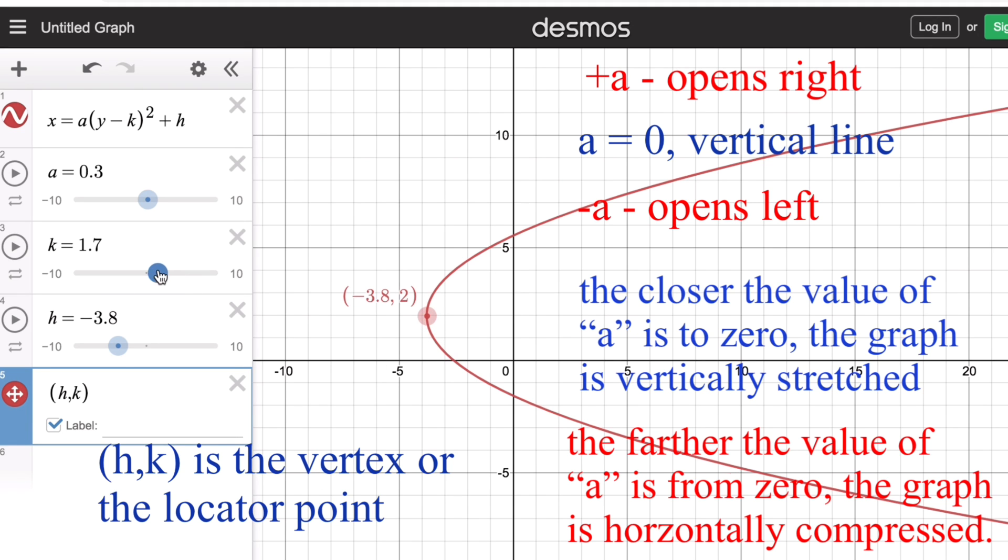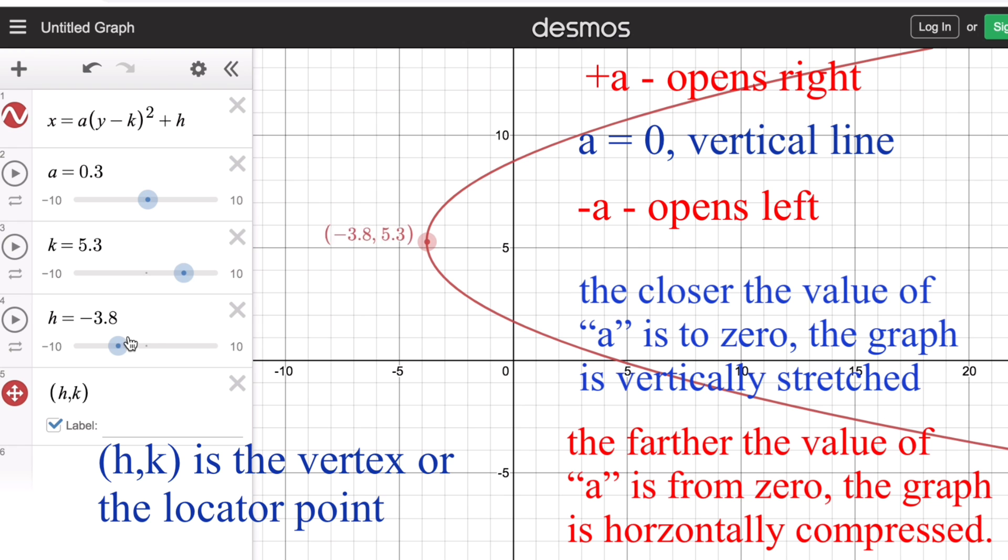Now we remember that k is the parameter that translates the graph up or down, while h is the parameter that translates the graph left or right.